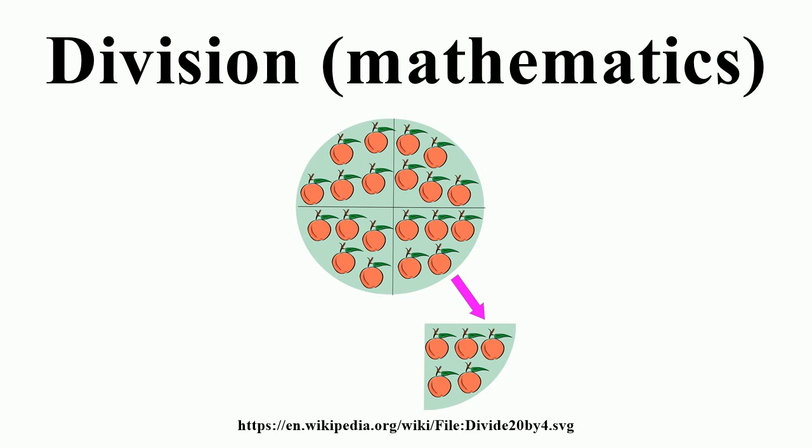If the dividend has a fractional part, one can continue the algorithm past the ones place as far as desired. If the divisor has a fractional part, we can restate the problem by moving the decimal to the right in both numbers until the divisor has no fraction.